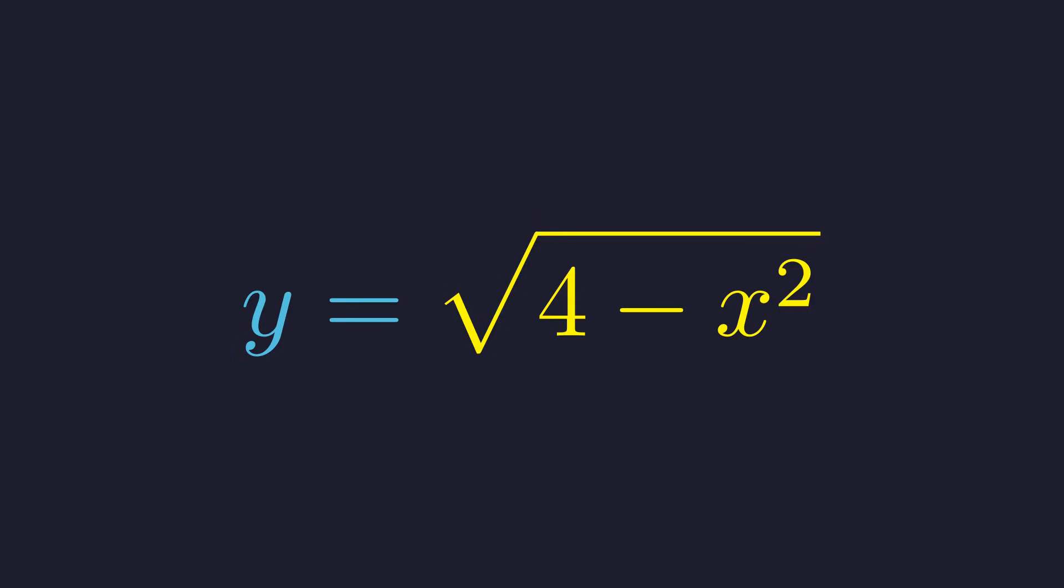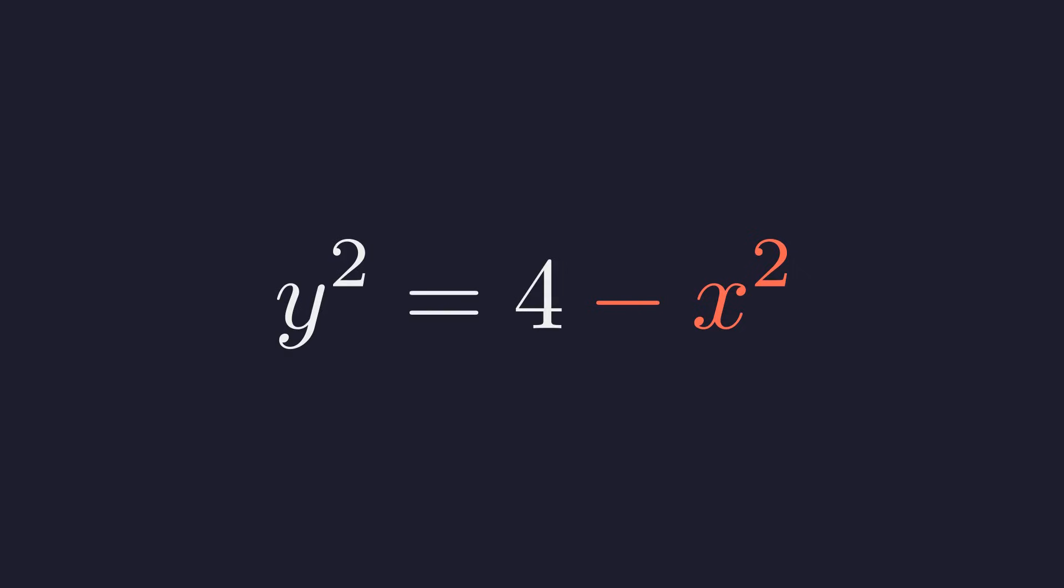Now, to see what shape this really is, we need to get rid of that square root. Square both sides. This is starting to look familiar. Let's move the x squared term to the left side. Add x squared to both sides, and we get x squared plus y squared equals 4.